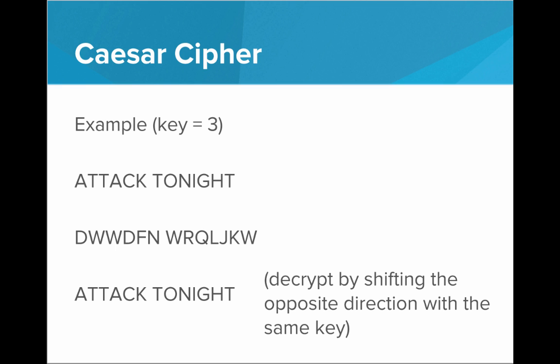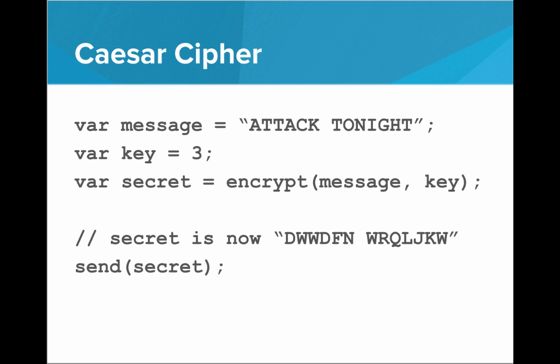So in this scenario, both Julius Caesar and the general need to agree on a key. The same key is used for encrypting as for decrypting. In code, it could look something like this. We have our message 'attack tonight,' we have our key of three, and the secret message is going to be the result of a function call to encrypt where we pass both the message and the key. This is the algorithm — the important part of the encryption. It takes the data we want to encrypt and the key to encrypt it with, and it returns a nonsensical message.